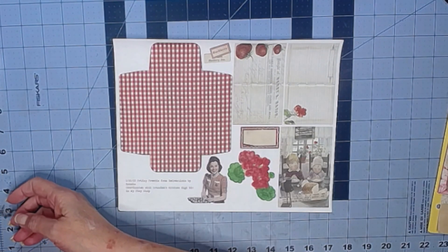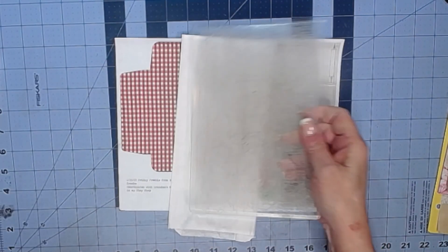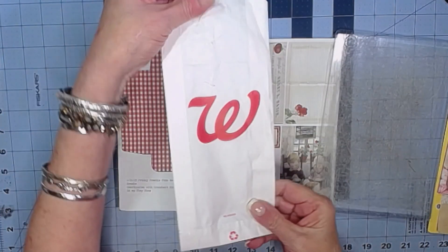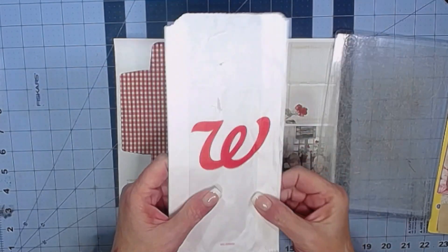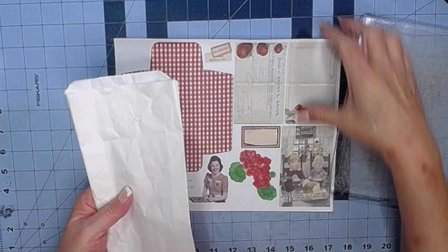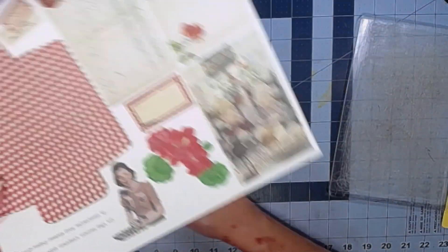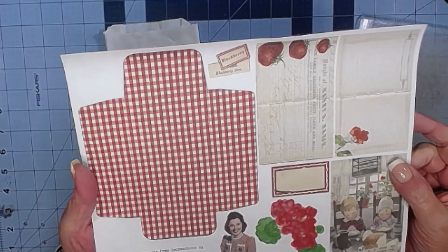So I've got out my Big Shot. So I have my Walgreens bag. I picked the staple out. It's got some holes in it because of the staple, but that's okay. And I thought I would use some of this gingham on the bag just to brighten up that white a little bit.